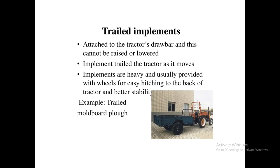The third type is a trailed implement. This is an implement attached to the tractor by a drawbar linkage. It cannot be raised or lowered since it is not completely mounted on the tractor — it is simply trailed behind the tractor as it moves forward.